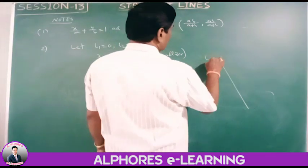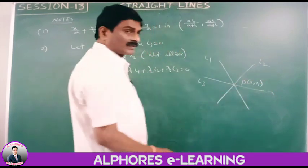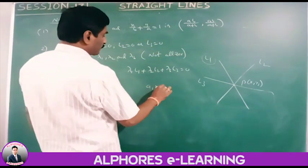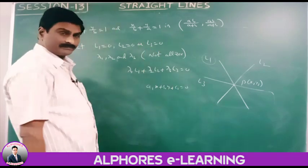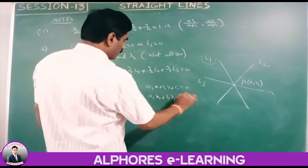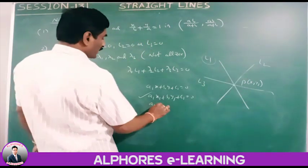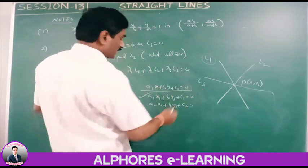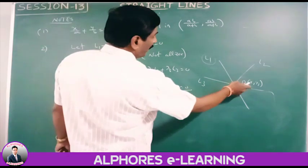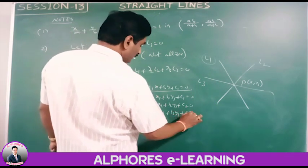Proof: suppose all three lines are concurrent at point P(x1, y1). Then P lies on l1, so a1·x1 plus b1·y1 plus c1 equals 0. Similarly, P lies on l2: a2·x1 plus b2·y1 plus c2 equals 0. And P lies on l3: a3·x1 plus b3·y1 plus c3 equals 0.